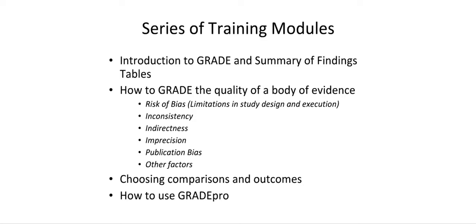This module is part of a series of training modules that include an introduction to the GRADE Approach and Summary of Findings Tables, how to grade the quality of a body of evidence, focusing on the risk of bias, inconsistency, indirectness, imprecision, publication bias, and other factors that lead to upgrading the quality of evidence. It includes a module on choosing comparisons and outcomes and how to use the GRADE Profiler, also called GRADEPro. This module deals with the other factors that lead to upgrading the quality of evidence.